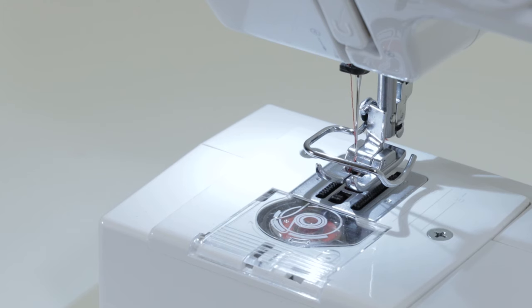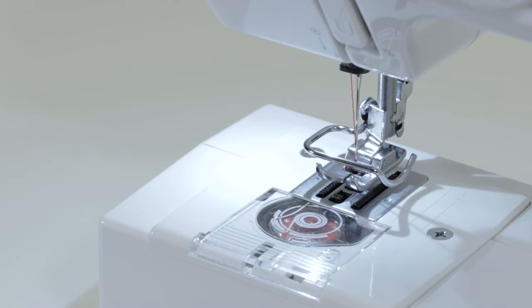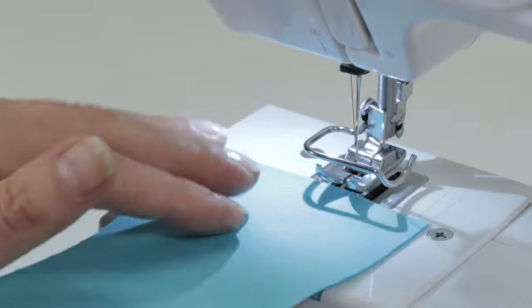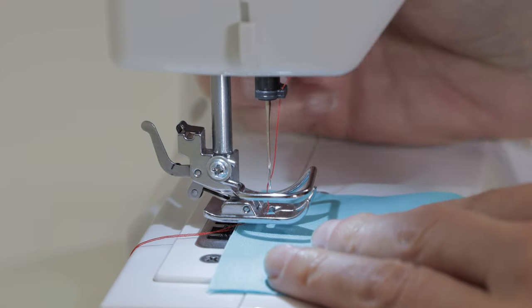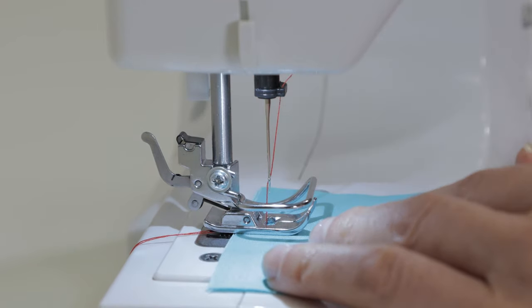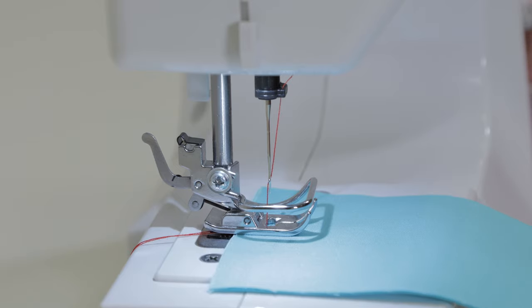Now that we've threaded the top of the machine, it's time to test our stitch to make sure we've threaded correctly. Place your fabric underneath the presser foot, lower the presser foot lifter, and step on the foot control to begin sewing.